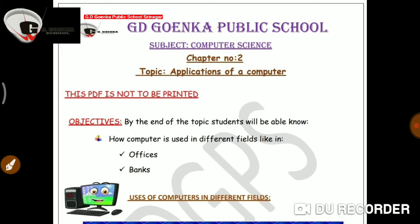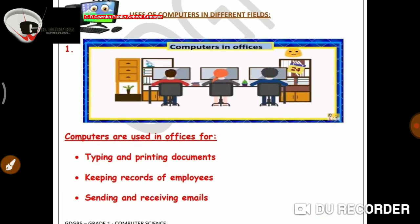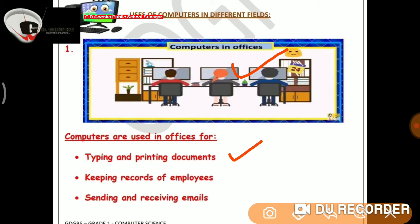So let us start. Number 1 is computers in offices. Computers are used in offices for: Number 1, typing and printing documents; Number 2, keeping records of employees; and Number 3, sending and receiving emails.